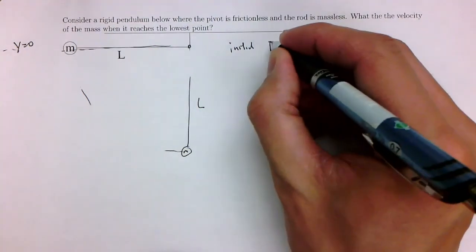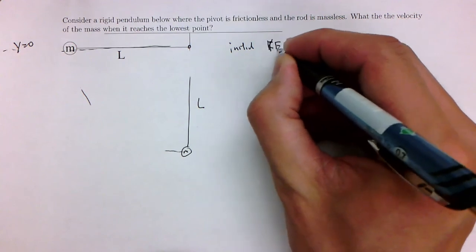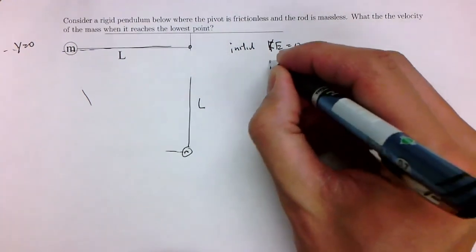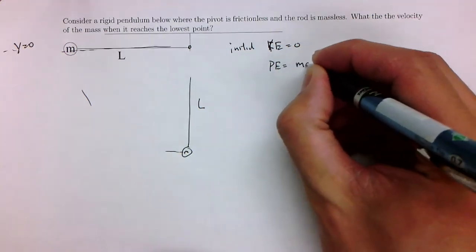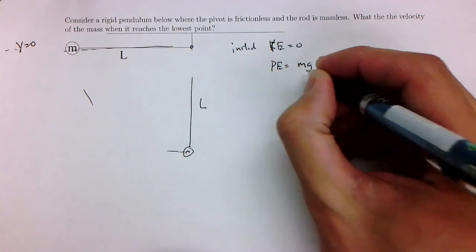So the initial kinetic energy, in this case, I'm releasing it from rest. That's equal to zero. The potential energy, on the other hand, that's going to be equal to mg times basically y1, or y initial is more like it.